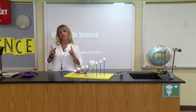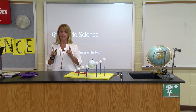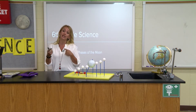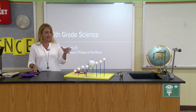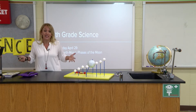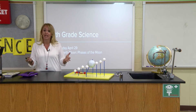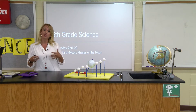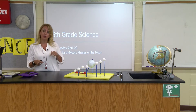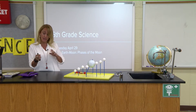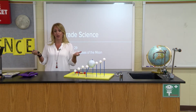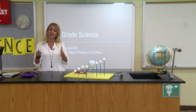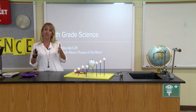The third model was actually the motion model. This was the model where we were rotating and revolving in the hallway, and what we saw is it creates this phenomenon where only one side of the Moon faces the Earth at all times. We call that a synchronous orbit, because the Moon's rotation and its revolution happen in about the same amount of time — they're kind of synced together because of the gravity between the Earth and the Moon.